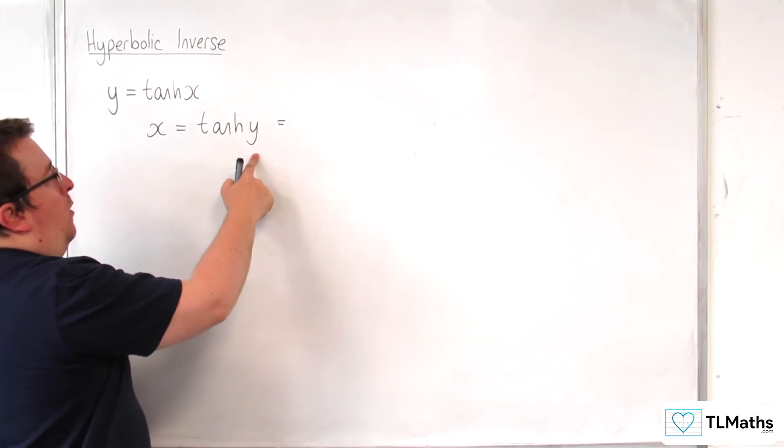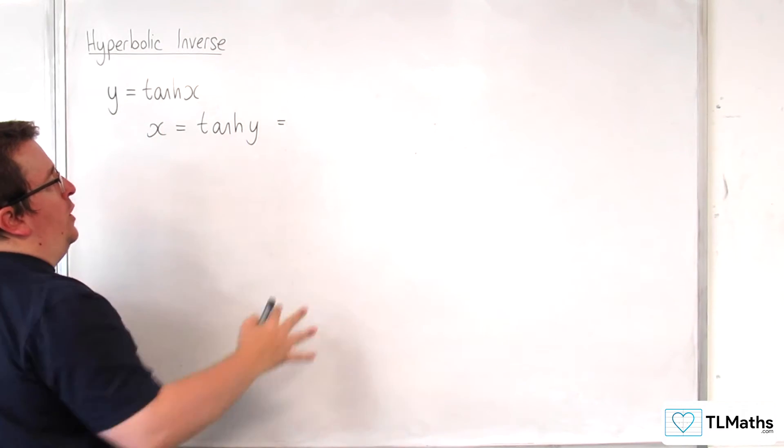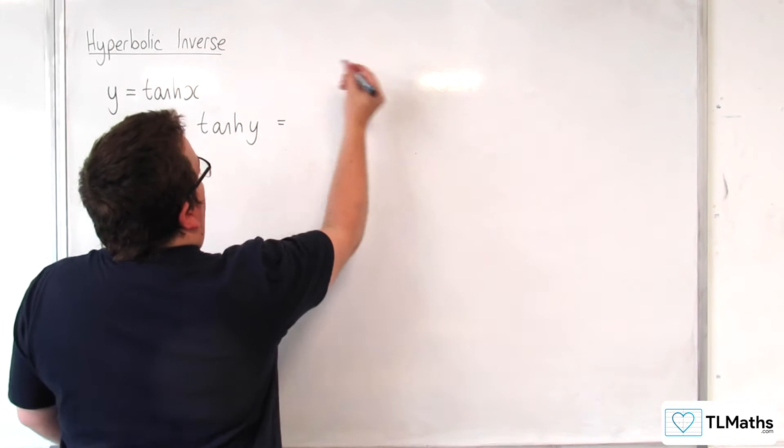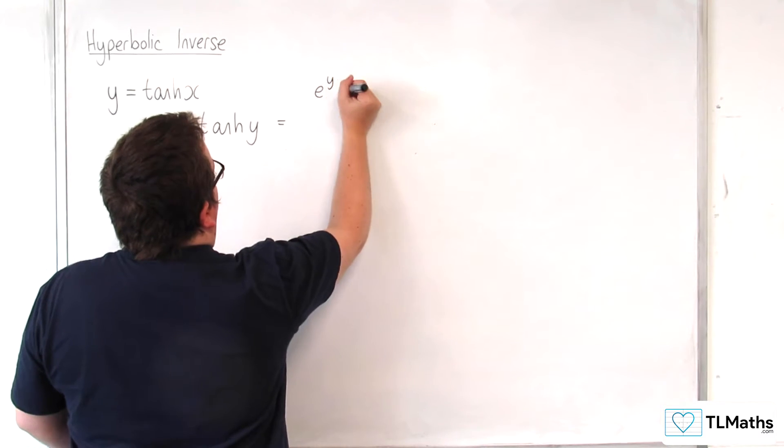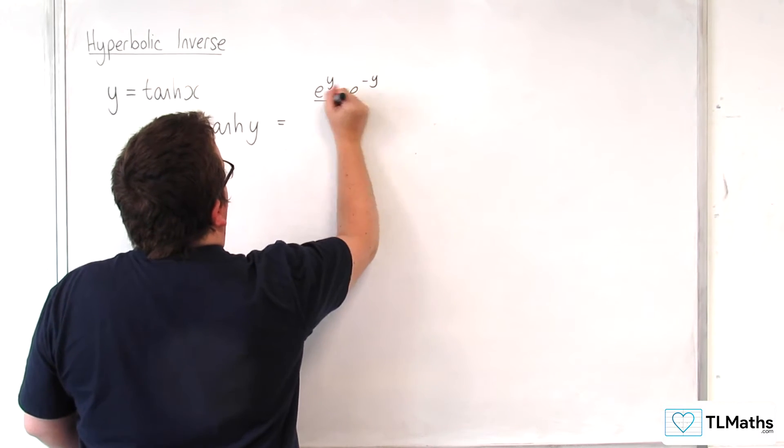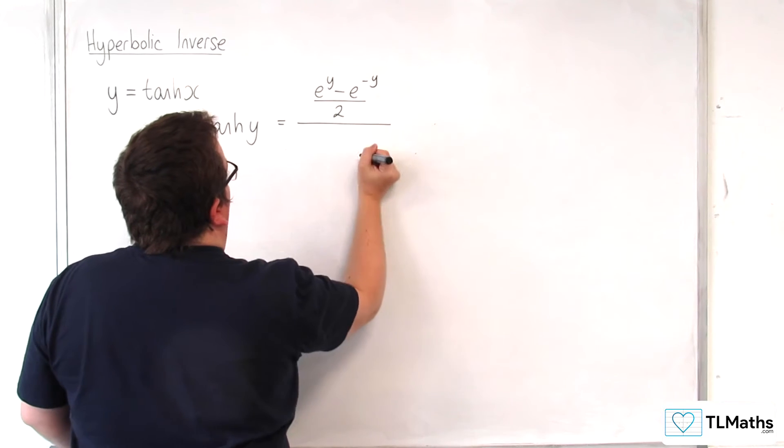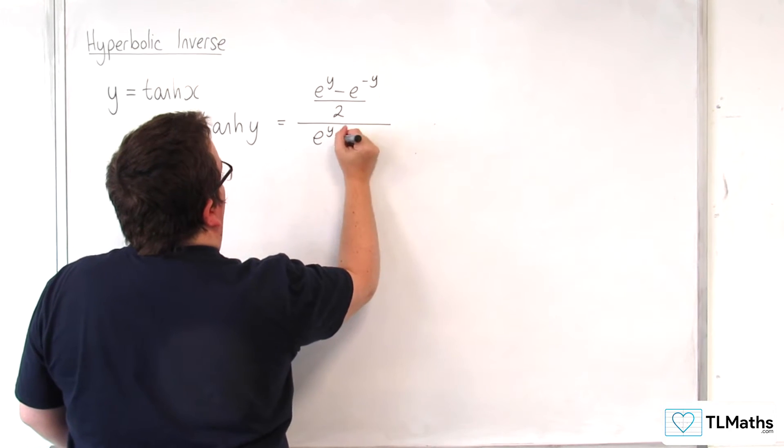And tanh of y we know is sinh y over cosh y. So that would be e to the y take away e to the minus y over 2, over e to the y plus e to the minus y over 2.